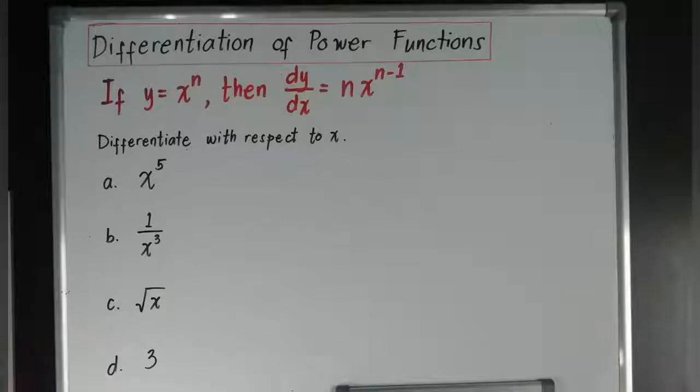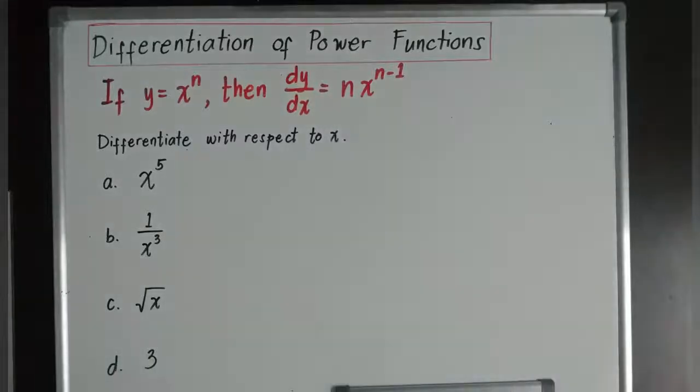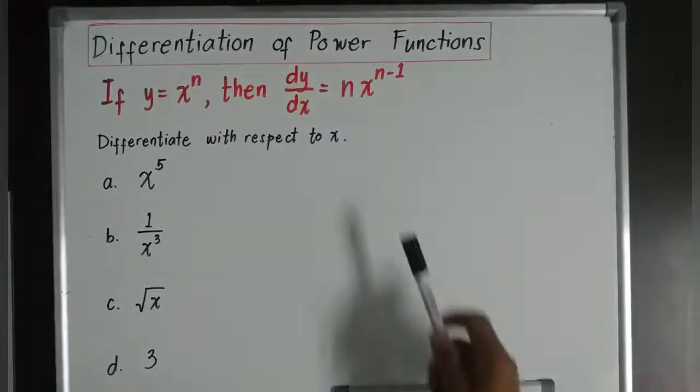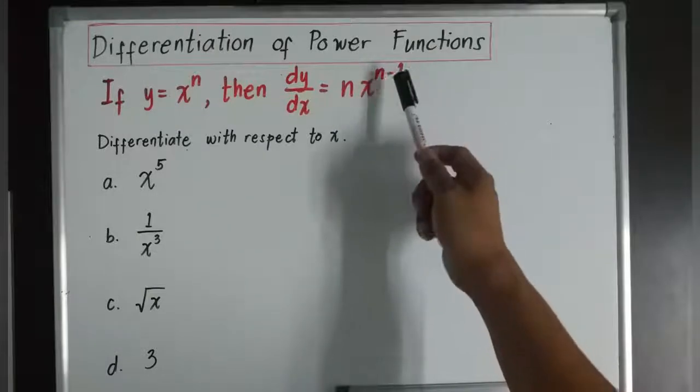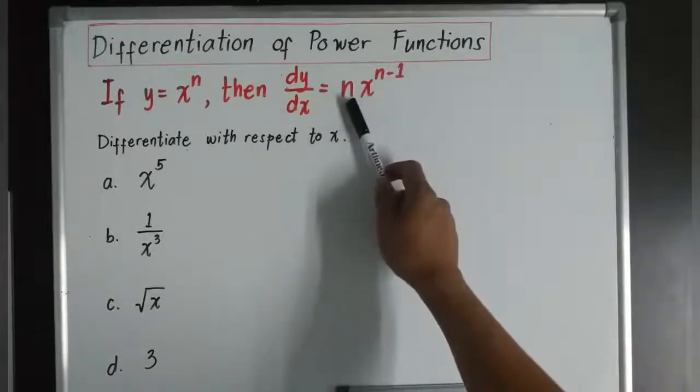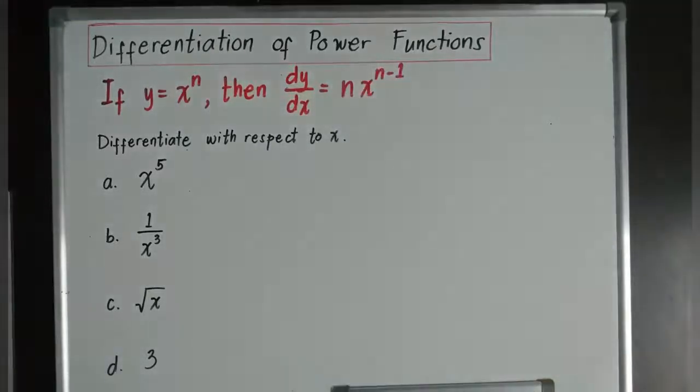So the derivative of the function is equivalent to multiply the x to the power of n minus 1 to the value of the n. What is that n? It is the index.